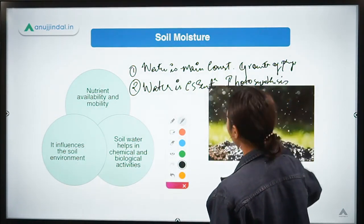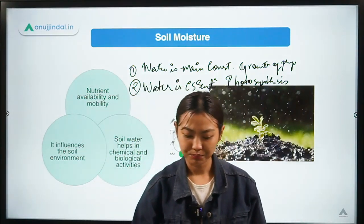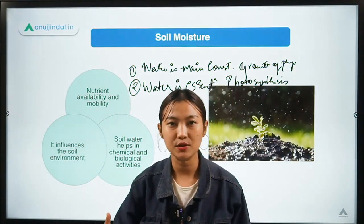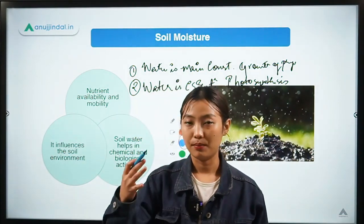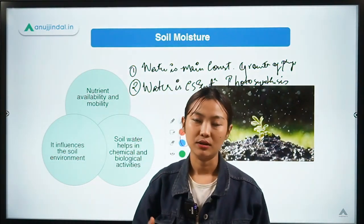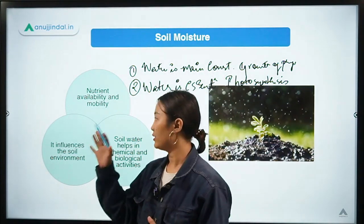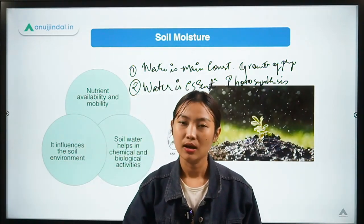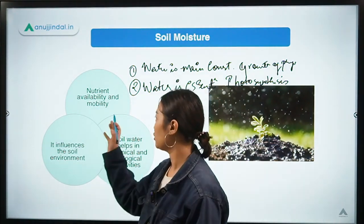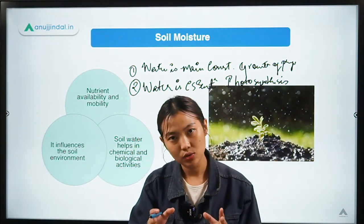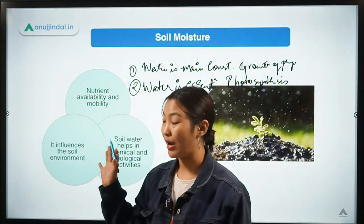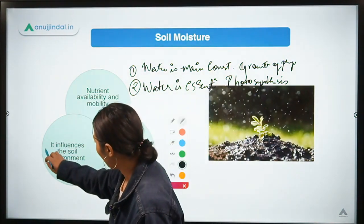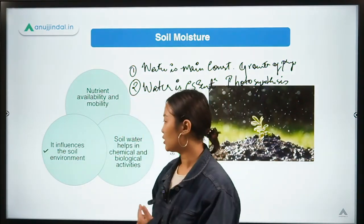Nutrient availability as well as the mobility of nutrients in the soil also depends on soil moisture. With higher soil moisture, the nutrient availability and mobility of these nutrients in the soil — and even the transport of these nutrients to the plants — also increases.